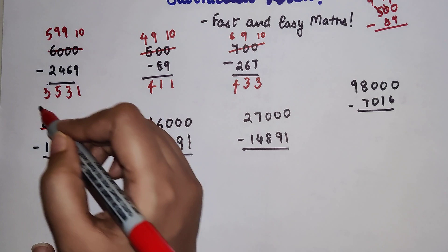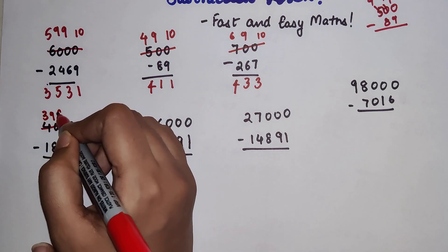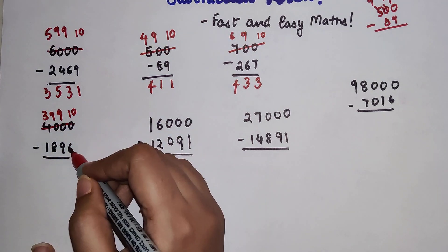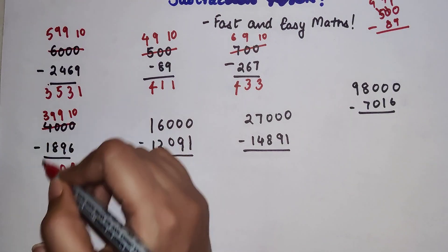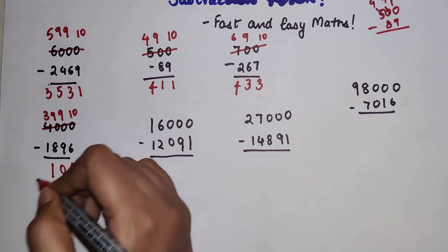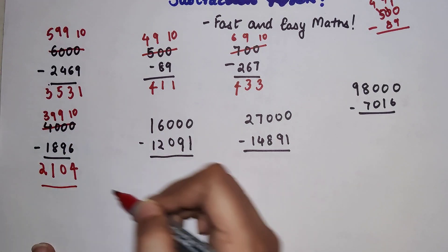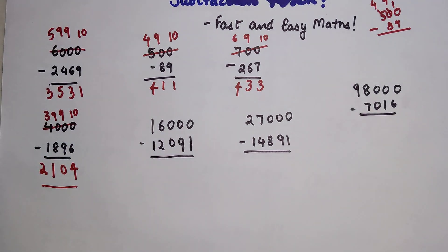So now this will be 3, 9, 9, 10. 6 taken from 10 gets you 4, 9 taken from 9 gets you 0, 8 taken from 9 gets you 1, and 1 taken from 3 gets you 2. So your answer for this one is 2104.